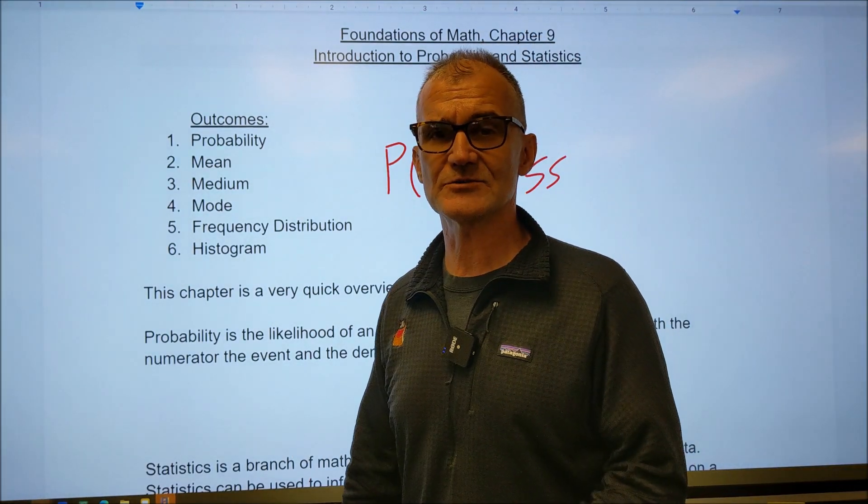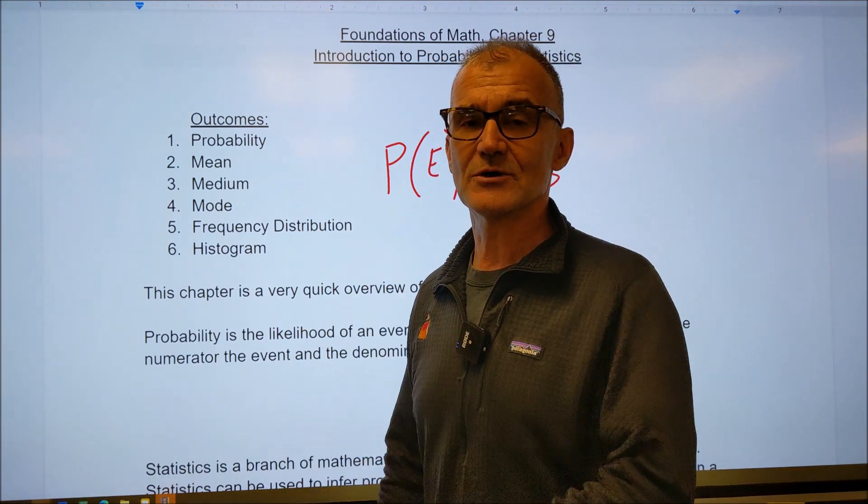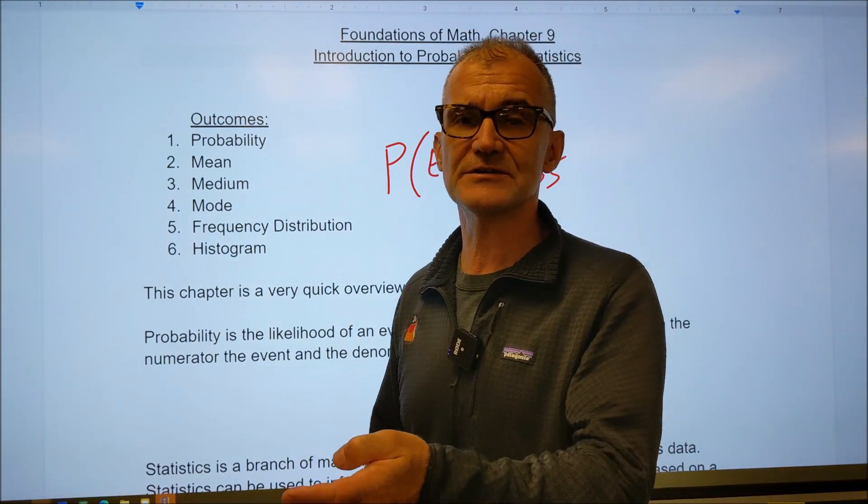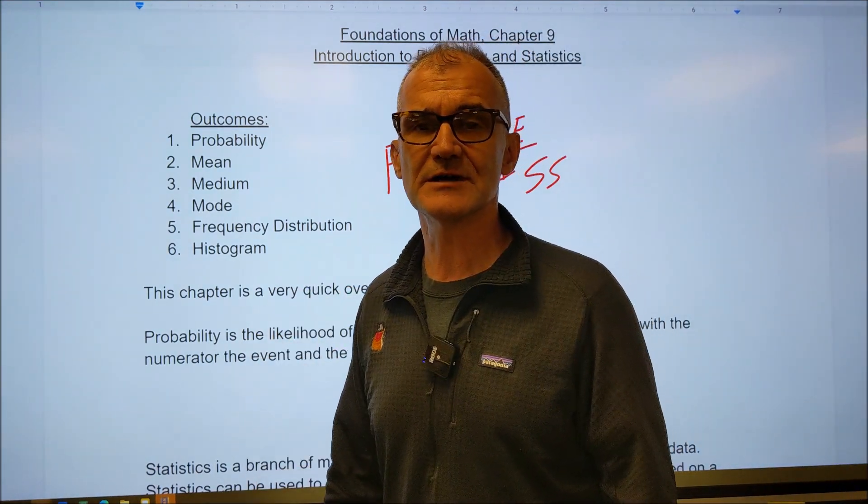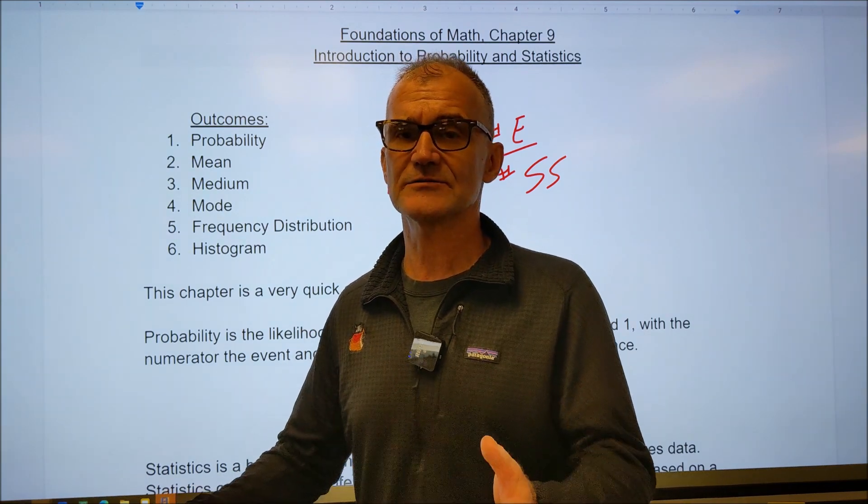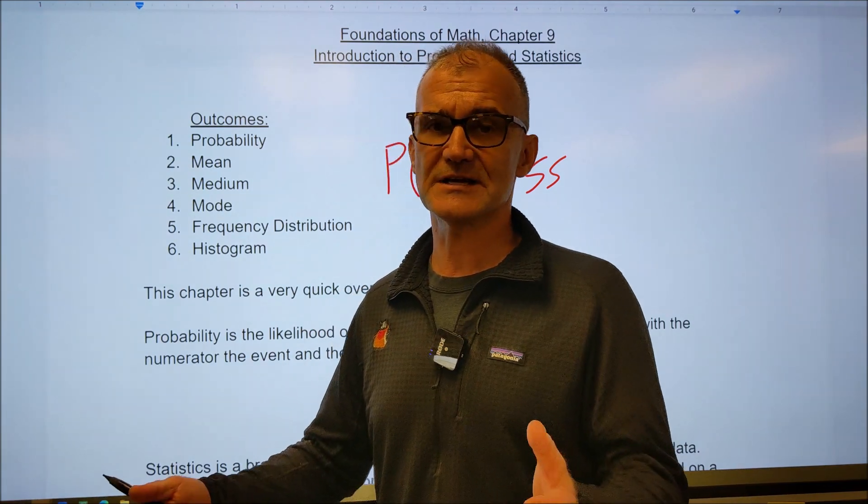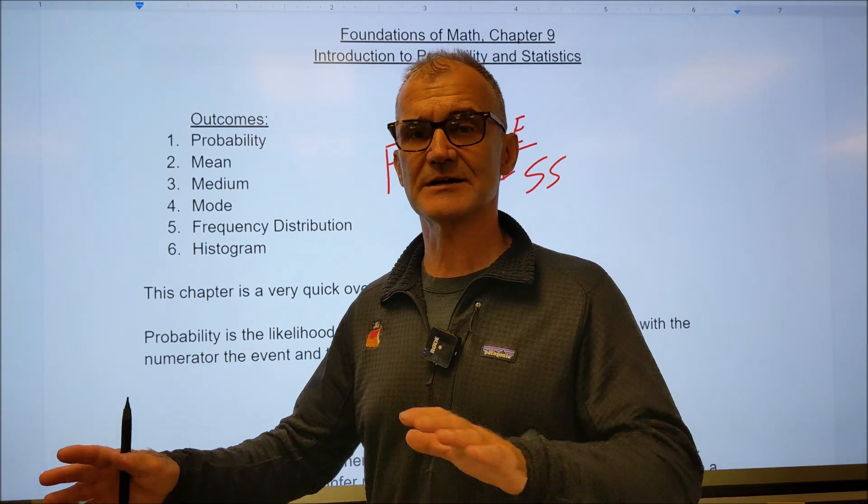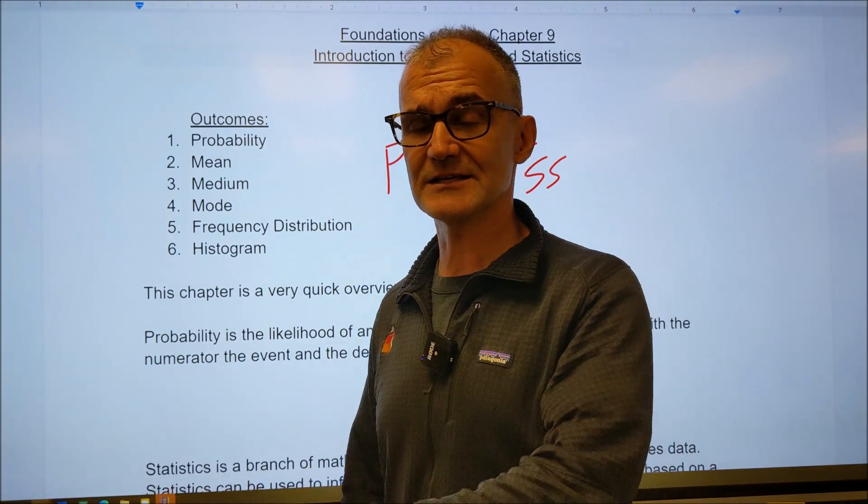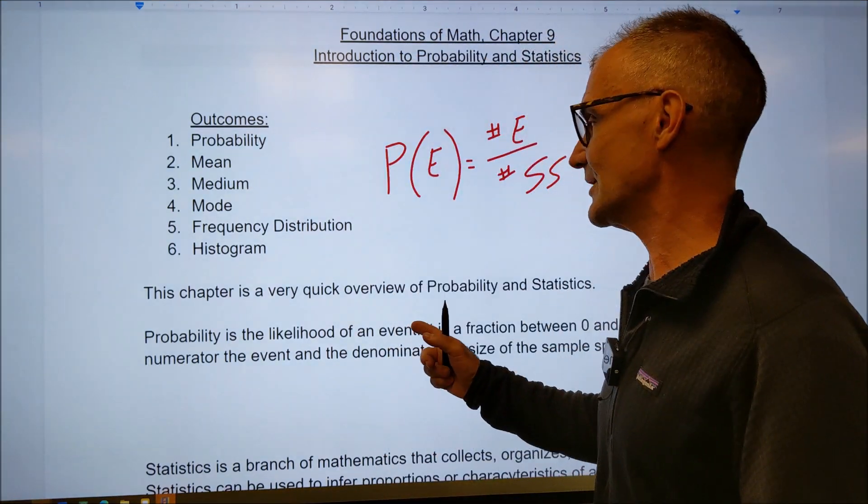The math notation for that would be the probability of any event is equal to the number in the event divided by the number in the sample space. Same with the deck of cards, what's the probability that I draw a jack? Well, I got to think about how many jacks are there? There are four out of the total 52, or four out of 52. I could reduce that fraction to one out of 13, or I could convert it to a decimal or a percent. They're all going to be the same, and I cover fractions, percents, and decimals in previous chapters. Again, everything linked in the description. So that's what probability is.